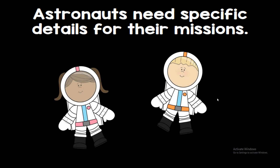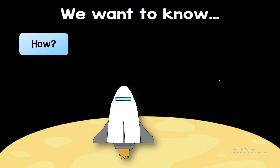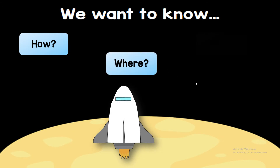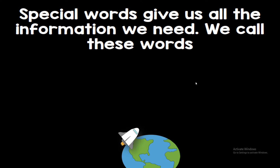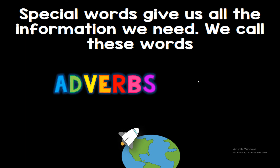Astronauts need specific details for their missions, and that's what adverbs do — they tell you specific details. Like 'you ran fast' or 'you ran slowly,' they tell you the details of what a verb is doing. Typically we want to know how, where, and when. Special words give us all this information, and we call these words adverbs.